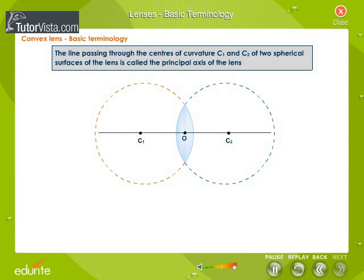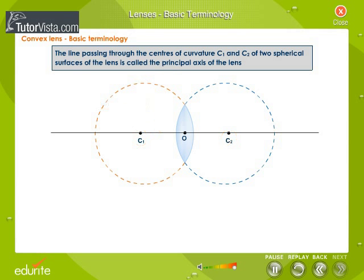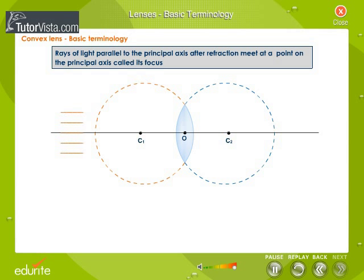The line passing through the centres of curvature C1 and C2 of two spherical surfaces of the lens is called the principal axis of the lens. Rays of light parallel to the principal axis after refraction meet at a point on the principal axis called its focus.